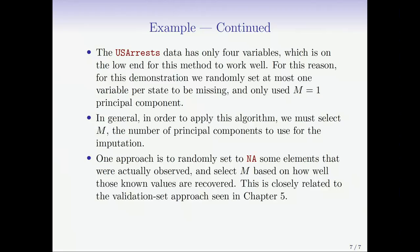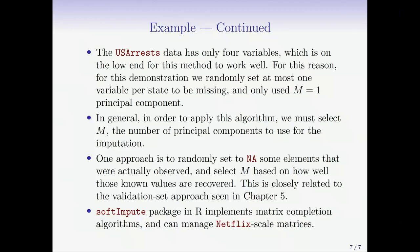In general, in order to apply the algorithm, we must select M, the number of principal components to use for the imputation. You can imagine if you make it too big, you may overfit in the training and not do well on the prediction. It turns out there's a way of doing this automatically using the same method. What you do is randomly set to NA some additional elements that were actually observed and select M based on how well these known values are recovered. This is very close to the validation set approach that we saw in Chapter 5. Even though you've got some elements missing in the matrix, you make a few more missing at random. Then you run your algorithm. But for those that you've artificially made missing, you know their true value. So you can see how well you're doing. You'll get something like a cross-validation curve.